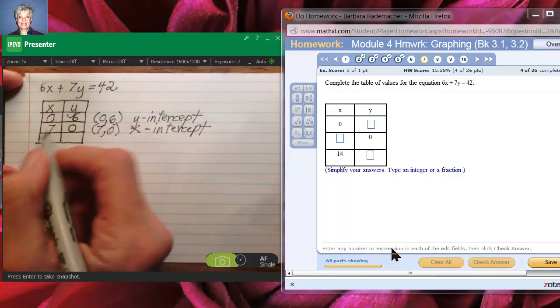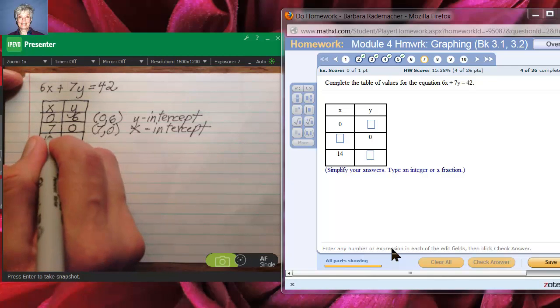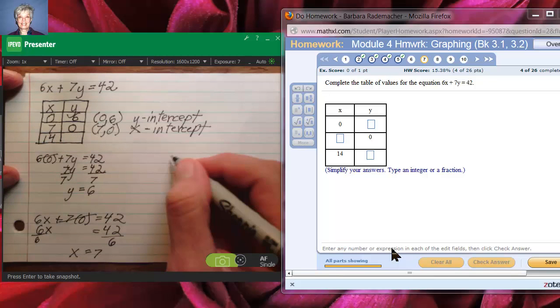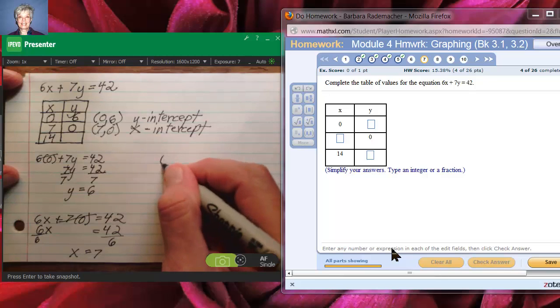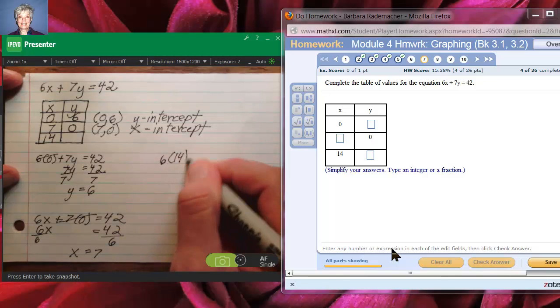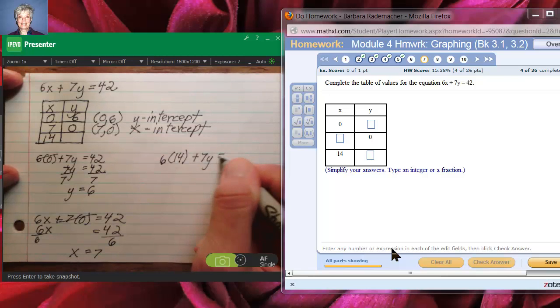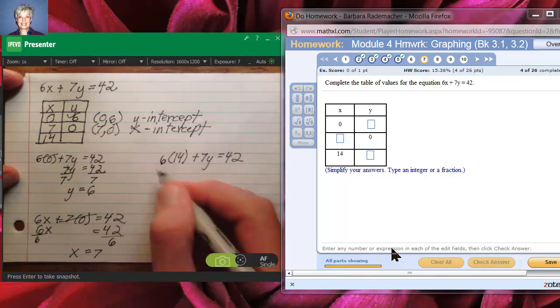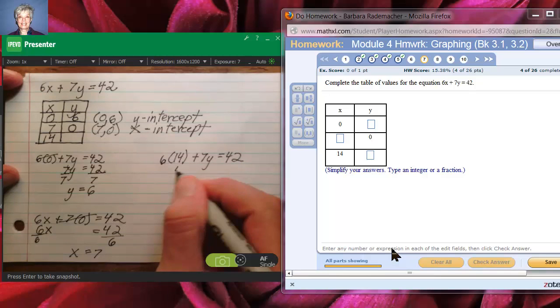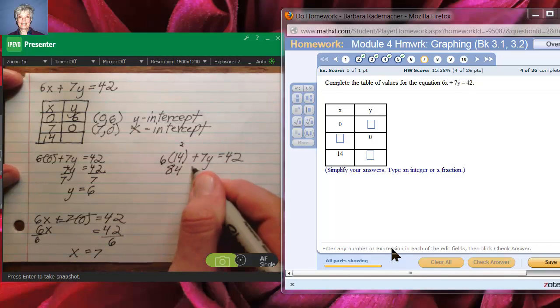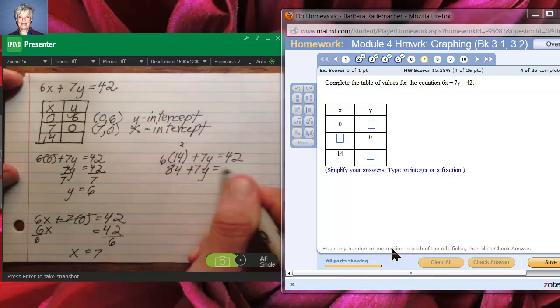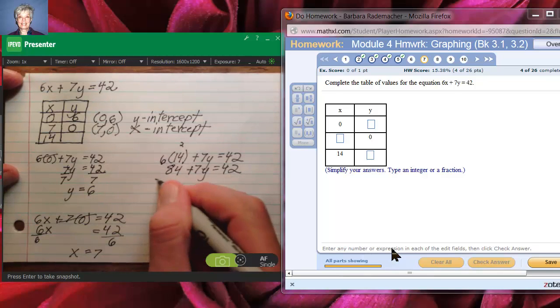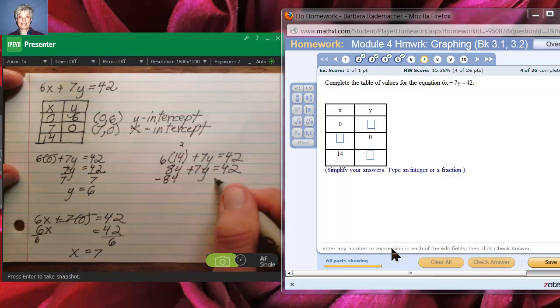The third point we're asked to find is one in which the x coordinate is 14. So let's come over here and we'll have 6 times 14 plus 7y equals 42. Now 6 times 14. 6 times 4 is 24, carry the 2. 6 times 1 is 6 plus 2 is 8. We'll have 84 plus 7y equals 42.